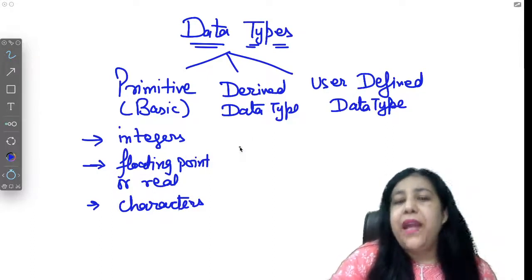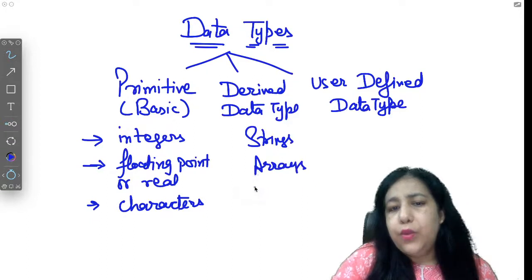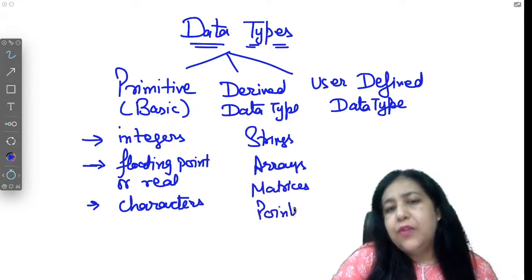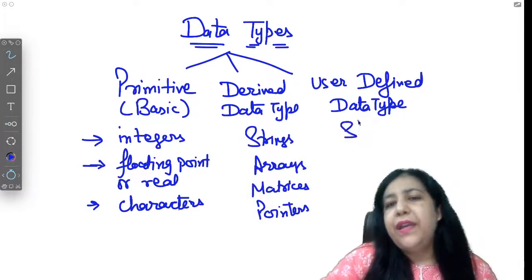Under derived data type comes strings, arrays, 2D arrays which we can also call matrices, and pointers. Under user defined, you will study structure, union, and enumeration.